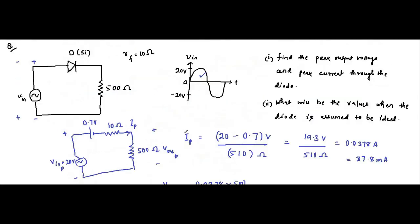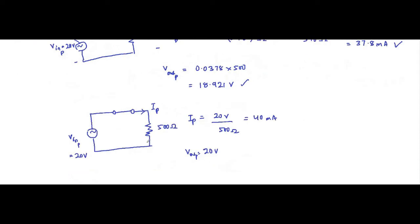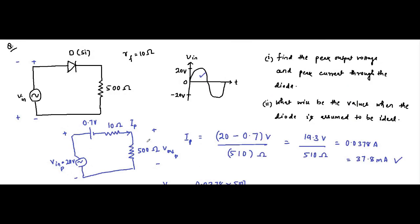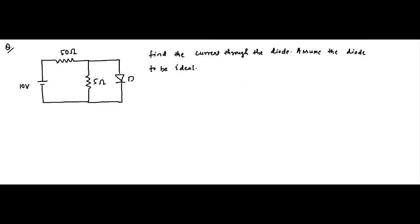So these are the two conditions. In the first case, with the silicon diode having 0.7 volt barrier potential and 10 ohm forward resistance, the peak current was 37.8 milliampere and peak output voltage was 18.921 volt. In the second case with an ideal diode — no barrier voltage, no forward resistance — the peak current was 40 milliampere and peak voltage was 20 volt.